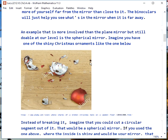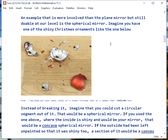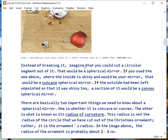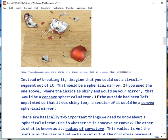Now, an example that's more involved than the plane mirror, but still not too bad, is a spherical mirror. Imagine you have one of these shiny Christmas ornaments. This is basically just a shiny ball. Instead of breaking it, let's say we just cut out a little circular segment of it. This would be a spherical mirror. If we use this one, notice it's shiny on the inside. That would give us a concave spherical mirror. If the outside, instead of being red, had been left unpainted so that it was shiny, and we use the outside, that would be a convex spherical mirror.